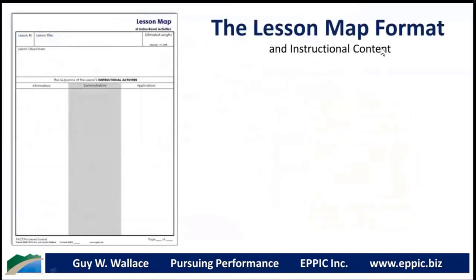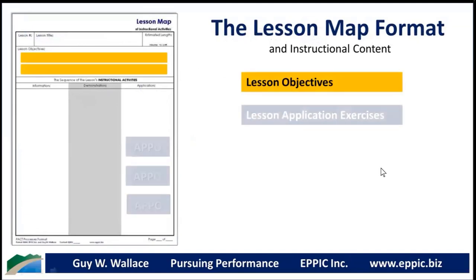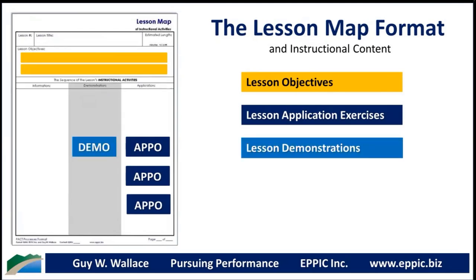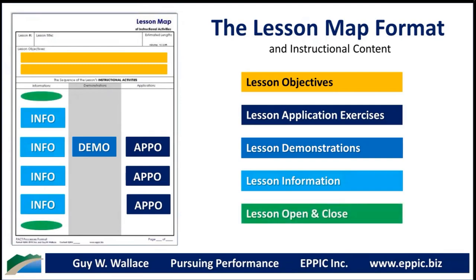The lesson map of instructional content includes: what are the lesson objectives, what are the application exercises, is a demo needed — yes or no — and then the information. There's also the lesson open and close, where we tell everybody what the lesson is about, what the learning objectives are, and try to connect to their prior knowledge.